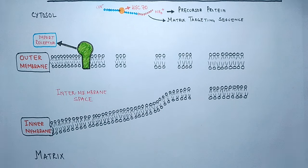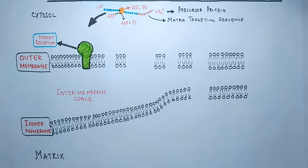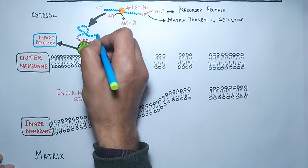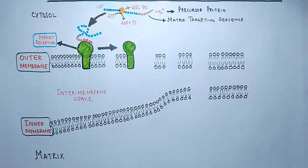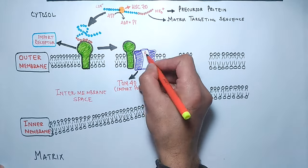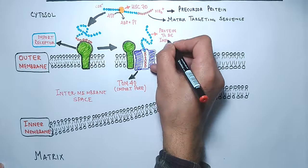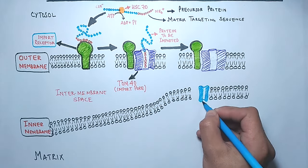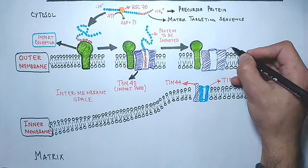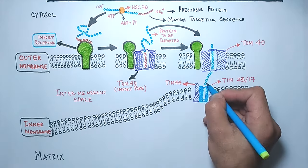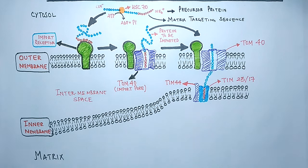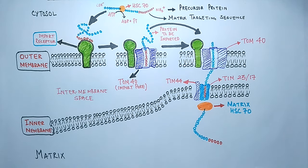Cytosolic HSC70 has a different function than matrix HSC70, as we will see later. This process requires energy supplied by ATP hydrolysis. The matrix targeting sequence binds to the import receptor on the outer membrane, targeting the protein into the TOM40 channel pore. The protein then moves through the inner membrane via TIM23/17 and TIM44 translocons, and matrix HSC70 pulls the protein inside into the mitochondrial matrix, also using ATP.